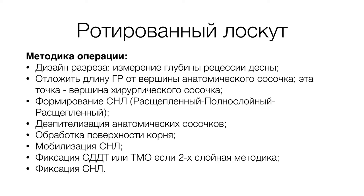Ротация лоскута заключается в том, что в области устранения рецессий выбирается центральный зуб — чаще всего это клык. Высота рецессии является основополагающей для всей ротации лоскута, который ротируется вокруг клыка, устраняя рецессии и на соседних зубах. При этой операции вертикальные разрезы на верхней челюсти не выполняются. На нижней челюсти выполняется один вертикальный разрез — между вторым резцом и клыком — чтобы исключить натяжение при конфликте с преддверием полости рта.